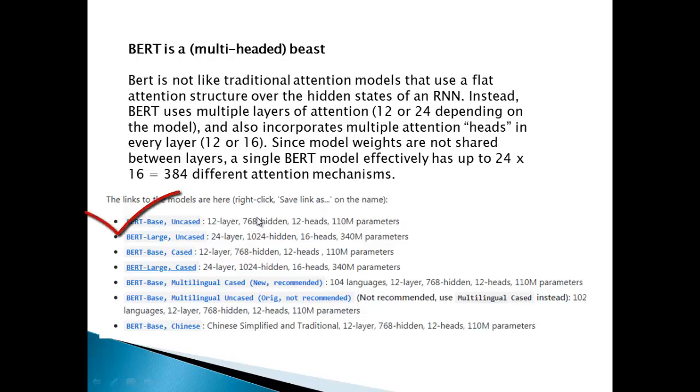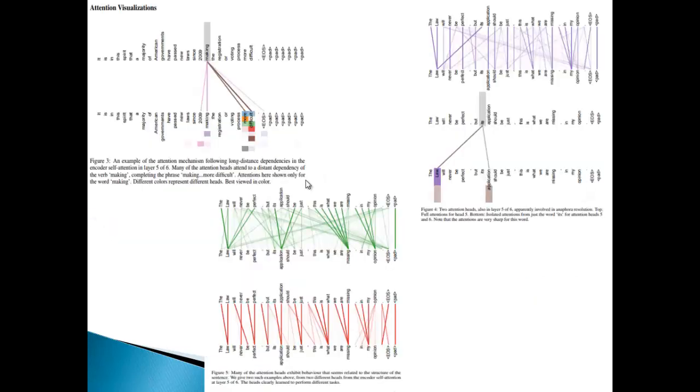For starting, you can use the 12-layer version because it is easier on the resources. I'm saying it is comparatively easier on the resources, though it still takes a lot of space and computation and memory. This slide tries to show how different attention layers correlate the query words with the token words.